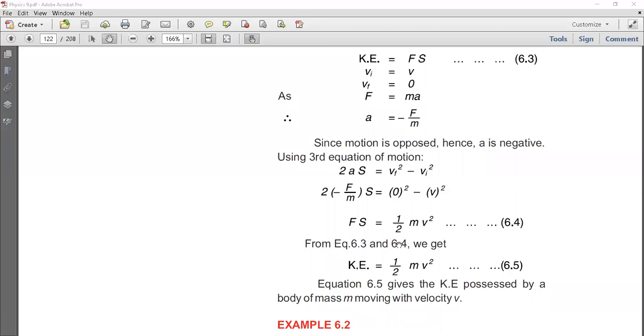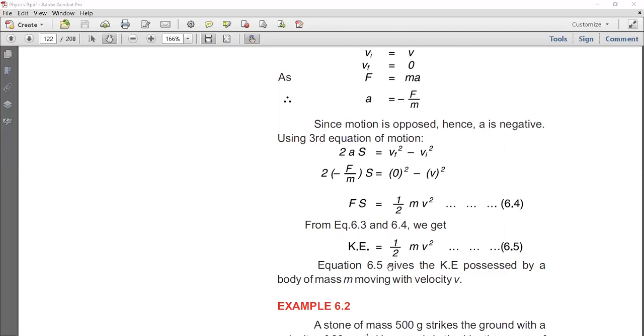From equations 6.3 and 6.4, we get FS = ½mv². We can clearly see this equals the kinetic energy. Therefore, kinetic energy KE = ½mv². This is a very important formula.